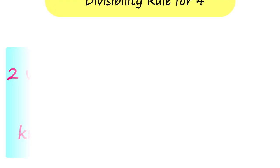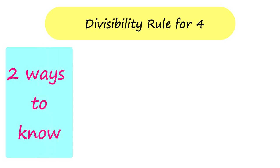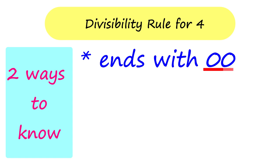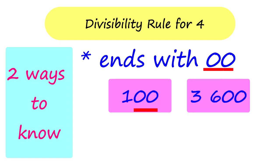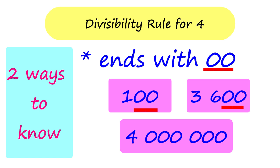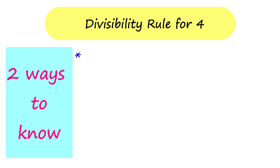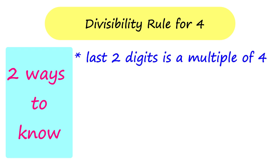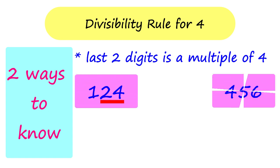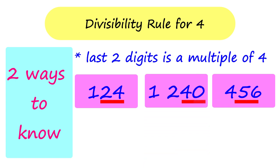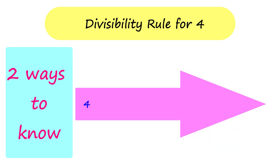Let's do a little recap on the ways how we could know if a number is divisible by 4. First, the number you want to divide should end with two zeros, like these numbers. 4 is a factor of all these numbers. Second, if they do not end with two zeros, you can check the last two digits of the number. If it's a multiple of 4, then the given number is divisible by 4. 4 is a factor of all these numbers.